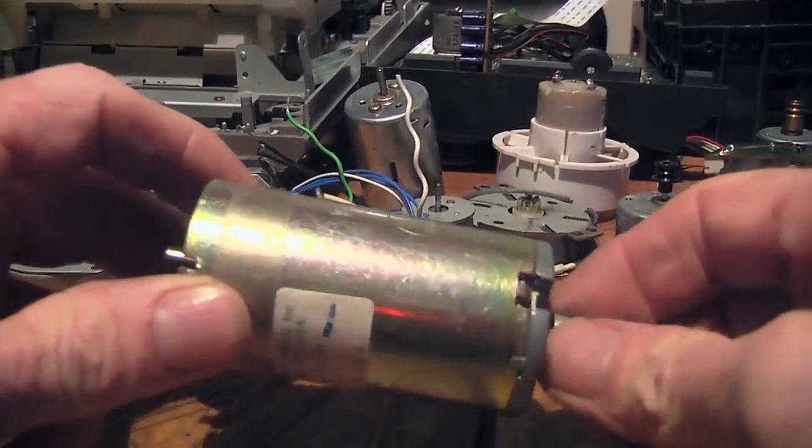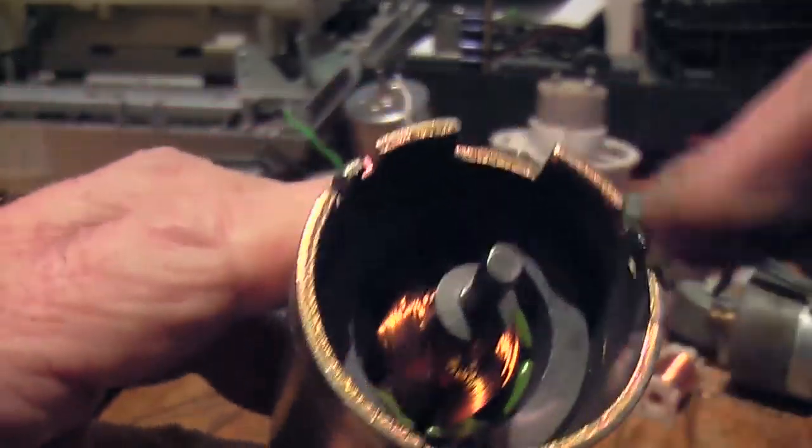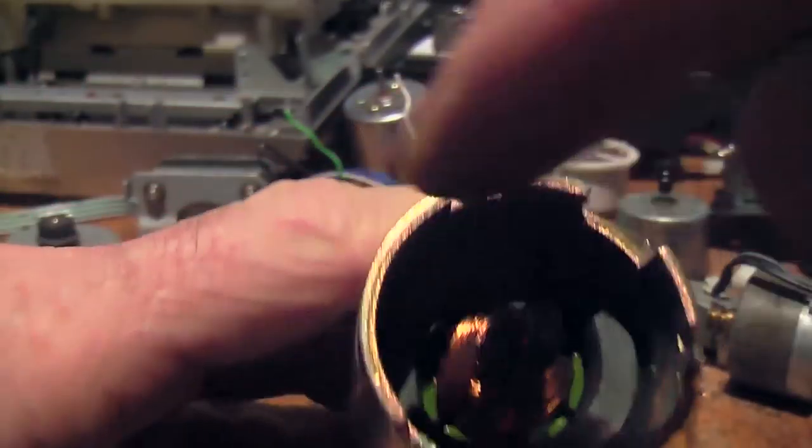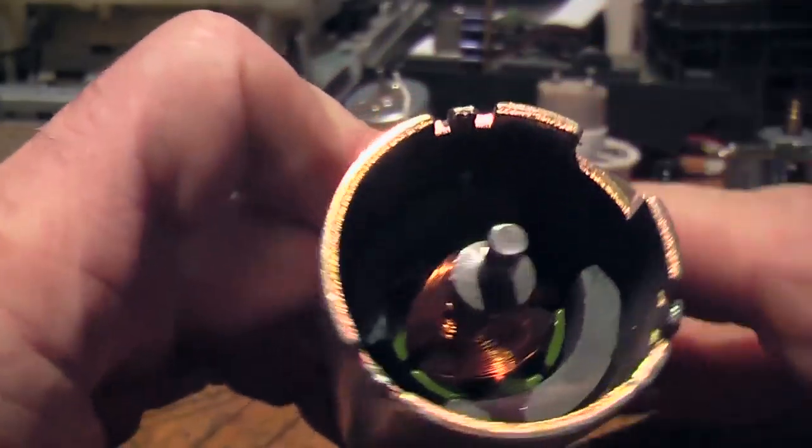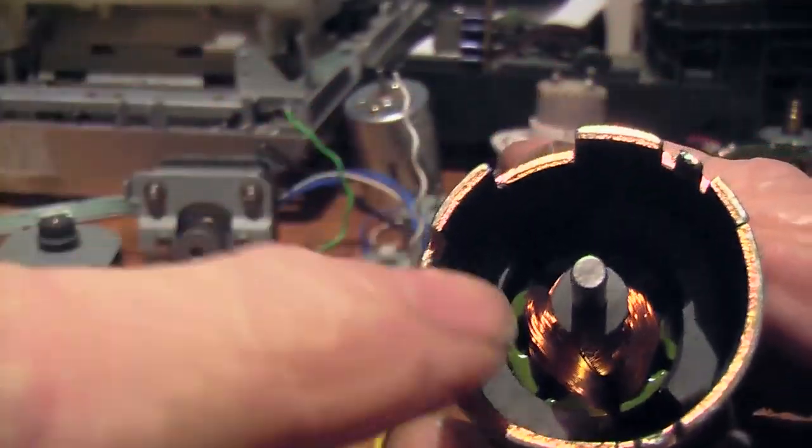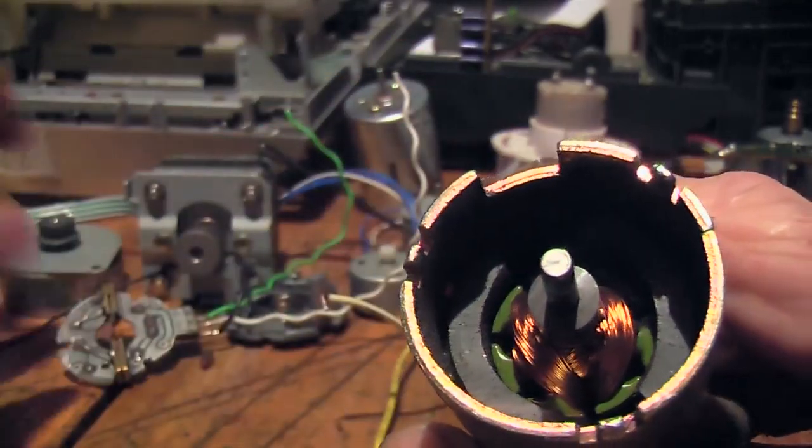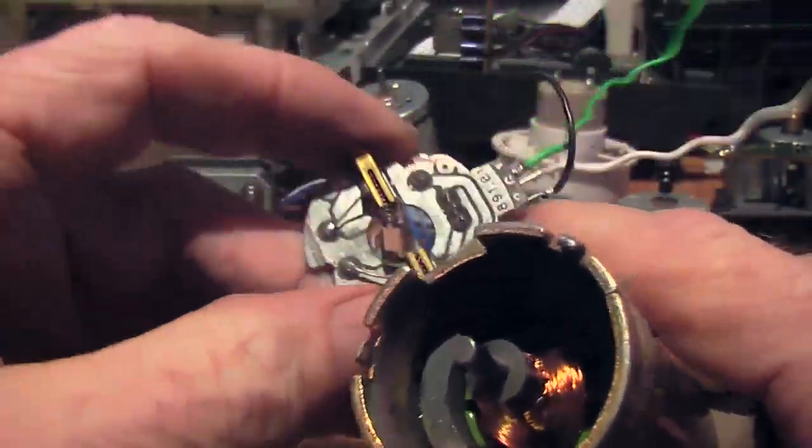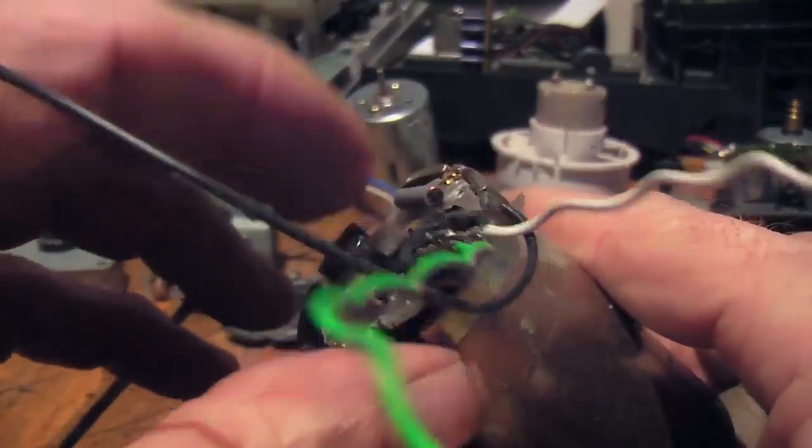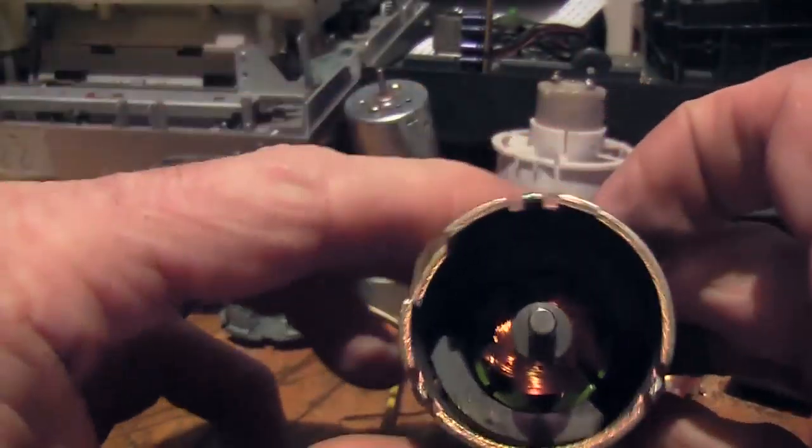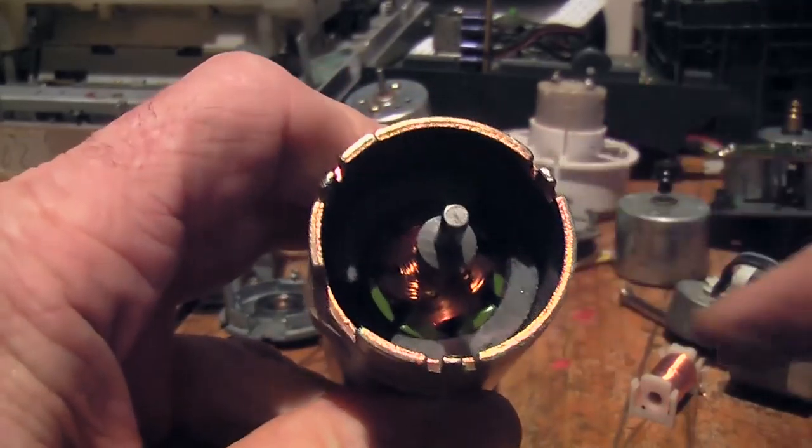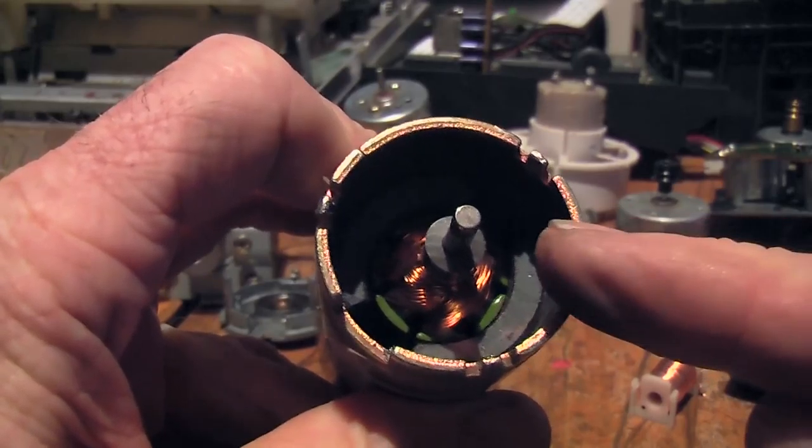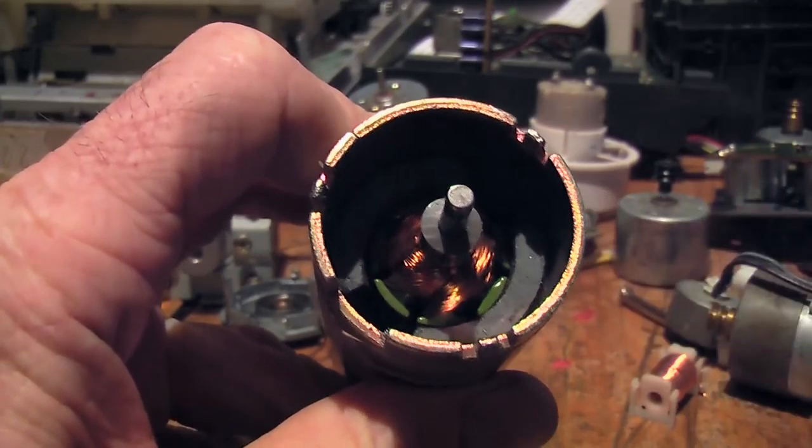Now there are lots of different designs of motors and generators, but here essentially is what one looks like. There are a couple of magnets, those curvy looking things there, and the coil there spins within the magnetic fields of those two magnets and generates electricity. And through some brushes here, it picks up the electricity and feeds it off with those wires. That's the basic essentials. Sometimes those magnets are electromagnets, which are wire with electricity passing through.